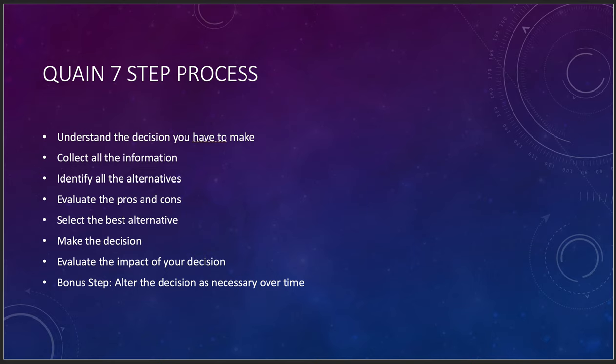The seven-step process starts with understanding the decision you need to make. We make decisions every day — getting coffee, getting in the car, traveling to a client — but the key realization is that a decision is necessary. Sometimes we procrastinate. You have to identify and define the type of decision: is it simple, like what kind of coffee to get, or is it a major business decision?